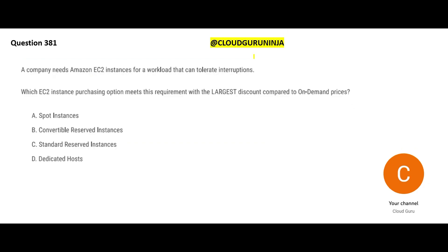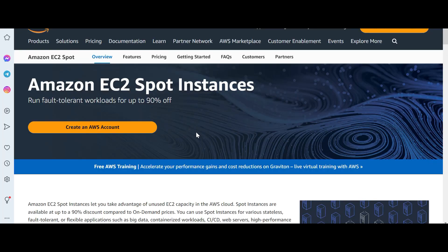Now, a company needs EC2 instances for a workload that can tolerate interruptions. The moment you see 'interruptions,' it means you are running something and the instance can go away — then you buy the instance again and run it again. What is this going to deal with? Spot instances. Spot instances are meant for this purpose — they give you a 90% discount.